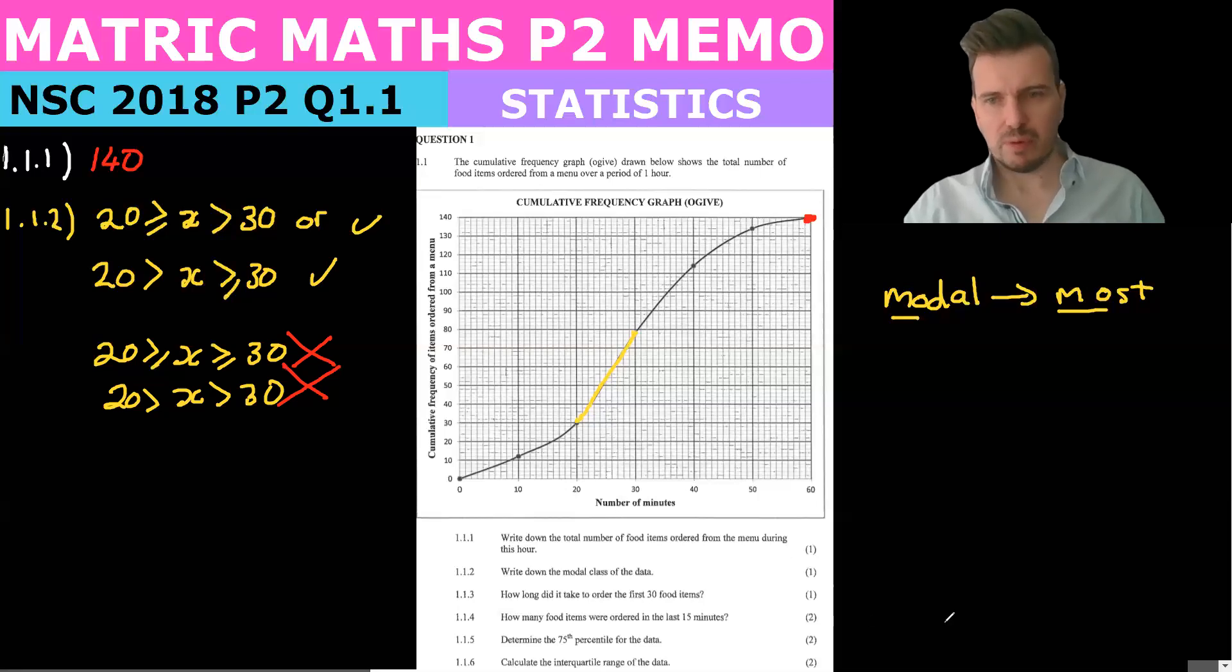1.1.3 says how long did it take to order 30 food items? Okay, the first 30. So we look, we go to 30, that was 30 items, and we check along there and it's 20 minutes. So 1.1.3 is 20 minutes.